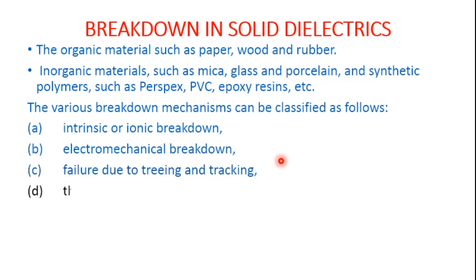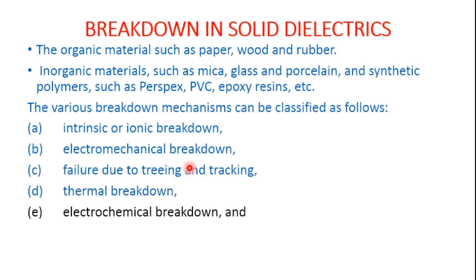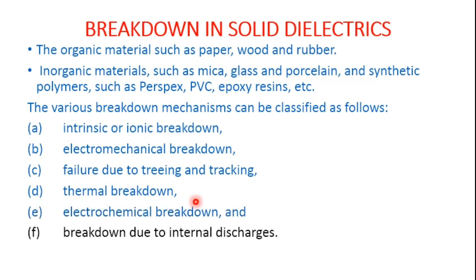Then we have thermal breakdown. When the insulator is subjected to operation over a period of time, there is a rise in temperature of the outermost layers. This is explained by thermal breakdown. Then we have electrochemical breakdown: because of the rise in temperature there is electrochemical deterioration. We also have breakdown due to internal discharges — if there is any void such as gaseous or liquid inclusions, the permittivity of those inclusions differs from the insulator, leading to internal discharges and eventually breakdown.